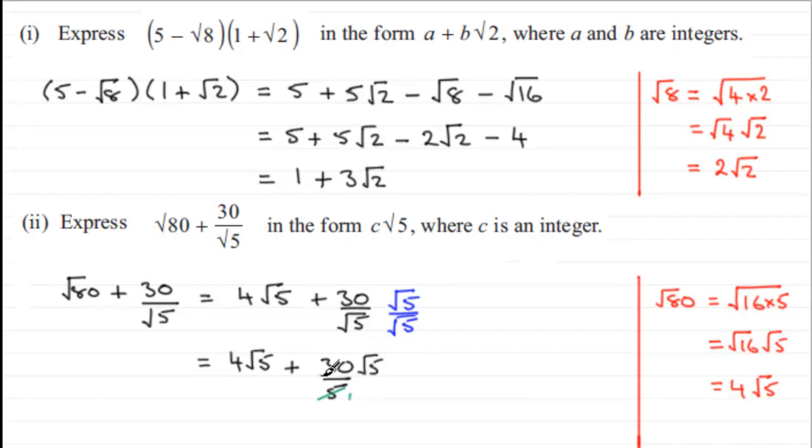So what we've got is 4 root 5 plus 6 root 5. 4 root 5 plus 6 root 5 is going to be 10 root 5, so we've got this in the form c root 5. If we asked what c was, it would be 10, an integer.